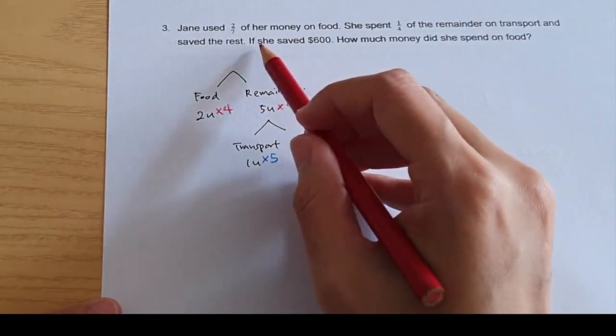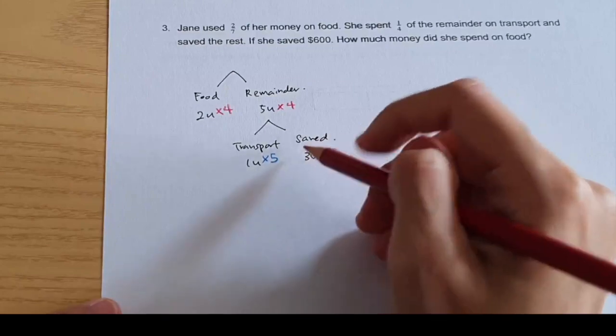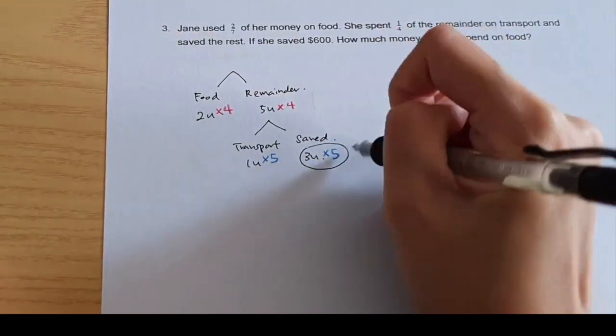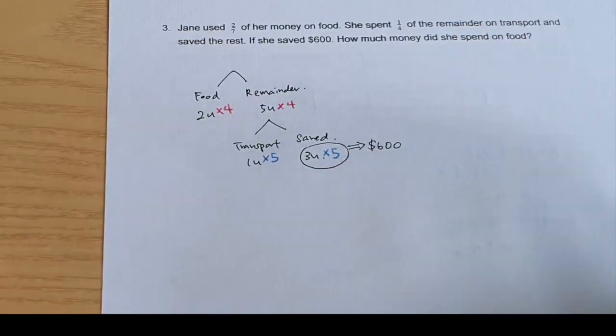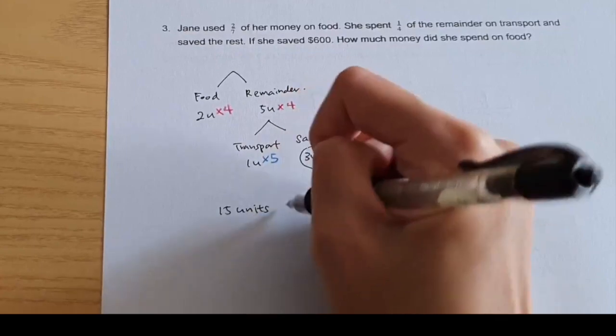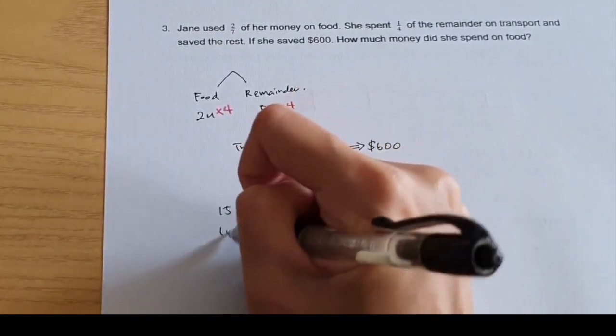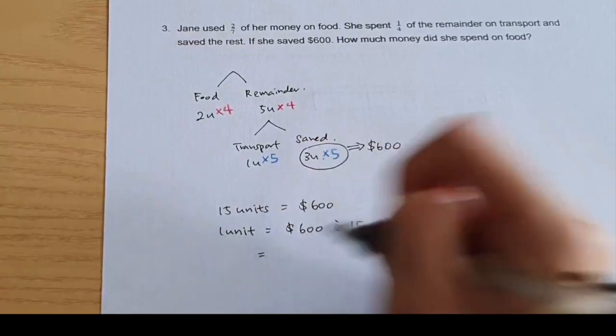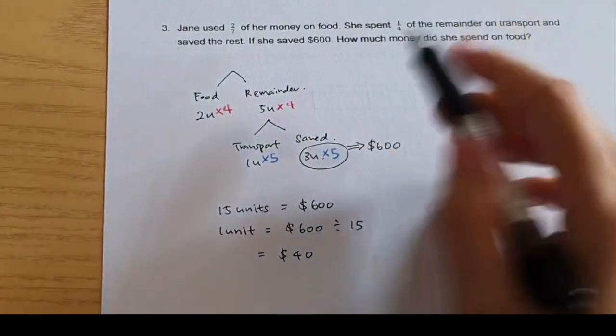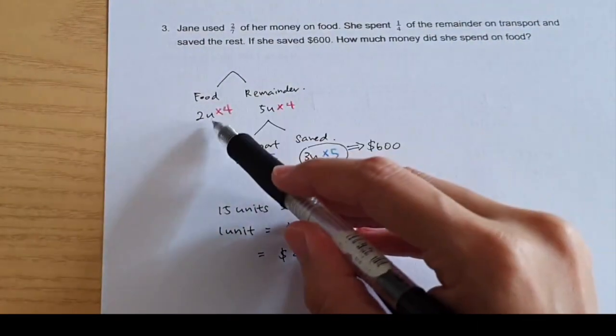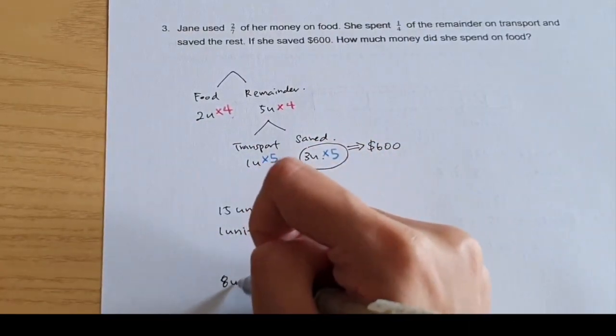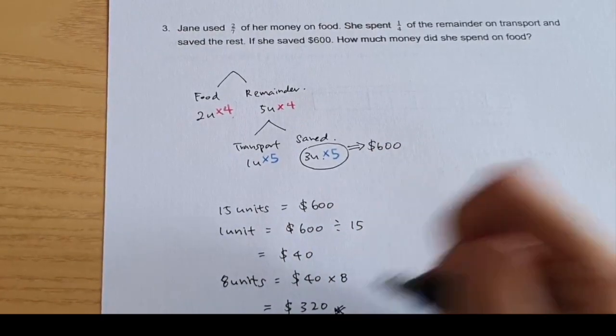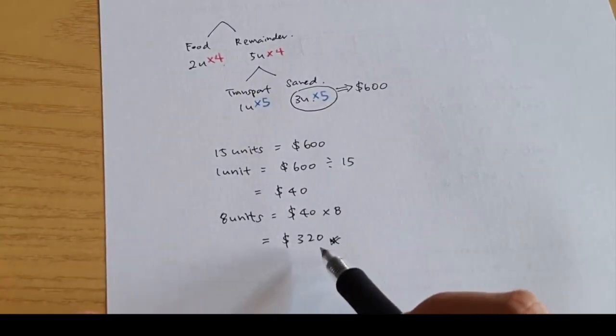Now let's continue with the question. If she saved $600, savings is $600. This means 15 units equals to $600. One unit equals to $600 divided by 15, which is $40. How much money did she spend on food? Food is here and food is 8 units. So we're looking for 8 units. And this is the answer.